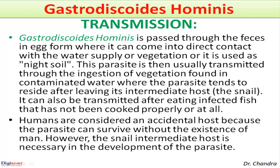Transmission of the parasite is through feces-contaminated vegetation. As eggs are passed through the feces, they can come into direct contact with the water supply or vegetation, or the feces is used as night soil. The parasite is usually transmitted through ingestion of vegetation found in contaminated water, where it resides after leaving its intermediate host — the snail.